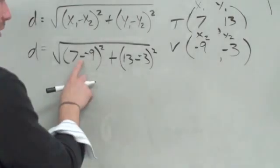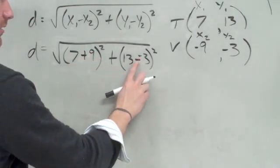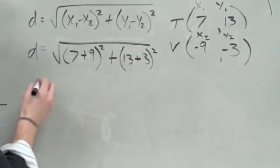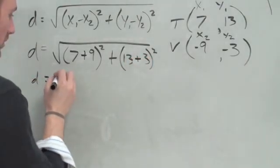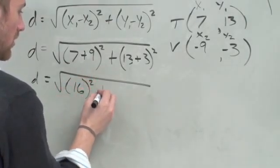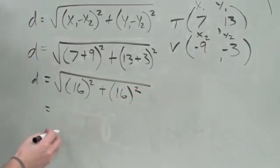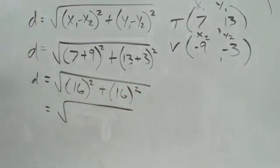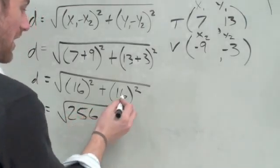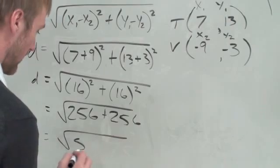First thing we're going to change: when you minus a negative, it turns into a positive. Alright, keep going. Square root sign. 7 plus 9 is 16, squared. Plus 13 plus 3 which is 16, squared. 16 squared is 256, and we know that one's going to be 256 as well. We add those together, we get 512.